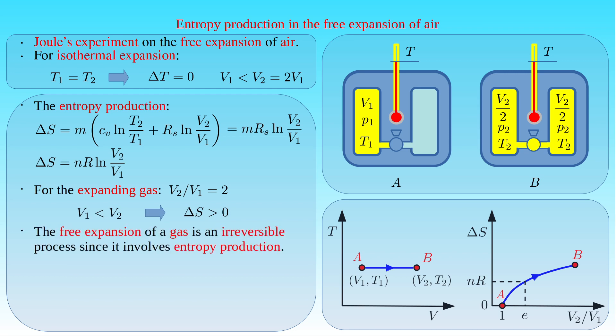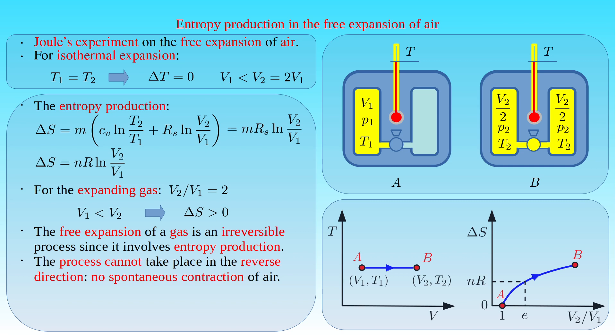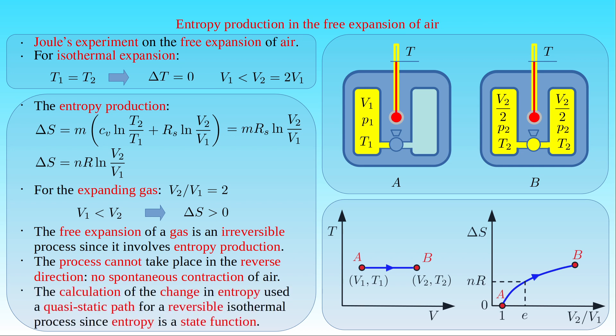We conclude that the free expansion of an ideal gas is an irreversible process since it involves entropy production. This process cannot take place in the reverse direction — the air filling both vessels cannot contract spontaneously to fill only one container, since the volumetric ratio would be less than 1, making the change in entropy negative. The entropy would decrease during isothermal contraction, which will not happen in nature. The change in entropy was calculated along a quasi-static path since entropy is a state function depending only on the initial and final states, not the path.